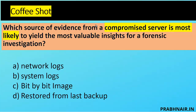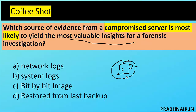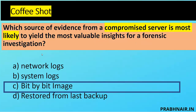Question 6: Which source of evidence from a compromised server is most likely to yield the most valuable insight for a forensic investigation? Network logs give network activity; system logs give system activity. Restoring from the last backup won't help because we may miss recent data. The best approach is to remove the network cable, dump the memory, and take a bit-by-bit image of the system — an exact copy that captures deleted files, slack space, and everything. Doing investigation on that image copy provides the most insight. Answer is C — bit-by-bit image.